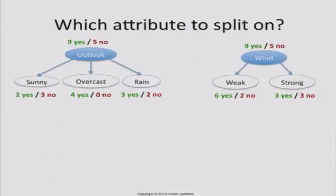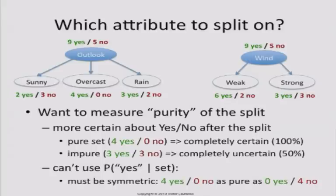Let's say we're at the start of the tree, right? We haven't split the data yet, and we could split on Outlook or we could split on WIND. So how would you pick which one to split on? If we split on Outlook, we end up with three sets, and one of them is pure and two of them are impure, with ratios of 2-to-3 and 3-to-2 of positives and negatives. And if we split on WIND, we don't have any pure sets, but we have one set which is 3 and 3 — totally 50-50 whether John will play or not — and for the other, it's mostly positive but there are two negatives as well. So which one is better? How do we know whether we should pick Outlook or WIND? The basic idea is you want to somehow measure the purity of the split.